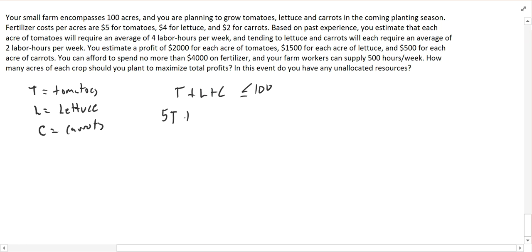So 5T would be how much money I'd spend on fertilizing tomatoes. 4L is how much money we'd spend on fertilizing lettuce, and 2C is how much we'd spend on fertilizing carrots. And we have a total of $4,000 to spend on fertilizer, so I've got that equation of 5T plus 4L plus 2C.